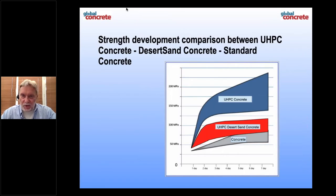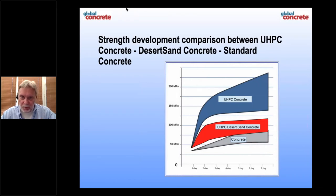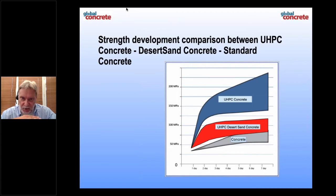On this slide you can see where our normal UHPC concrete sits — that is the normal area. And below, the gray area is the standard concrete you can buy or mix. So the desert sand concrete — and that is again a surprise — can be the material in the middle between high-class UHPC concrete and standard concrete. With desert sand concrete we can cover everything that concrete can do. Desert sand concrete is much better than we expected in the beginning.